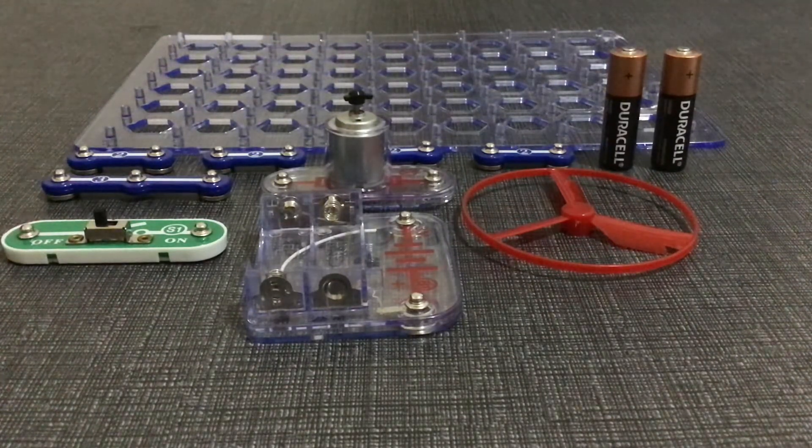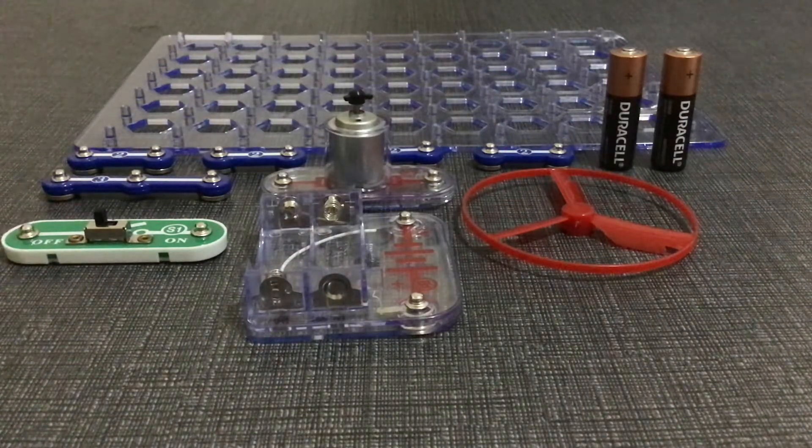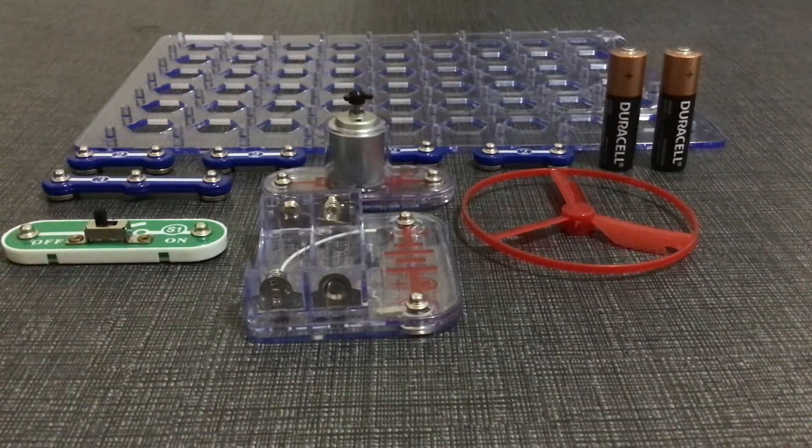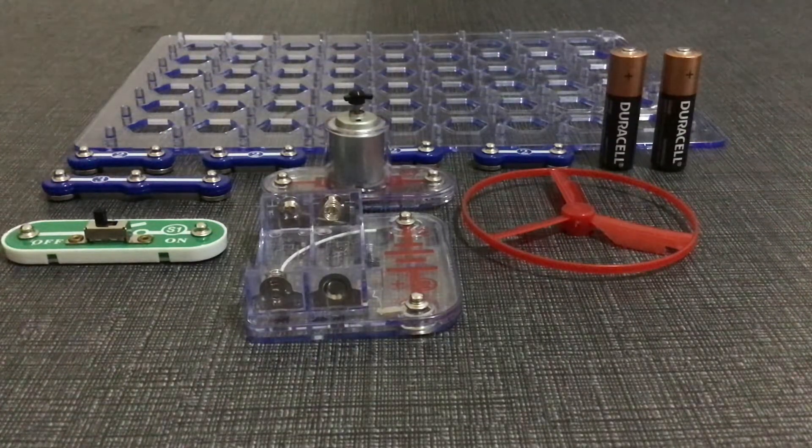Here are the pieces you're gonna need. You're gonna need one Snap Circuits board, four two snapped wires, two AA batteries, a three snapped wire, a fan, a fan blade, an on and off switch, and a battery pack.